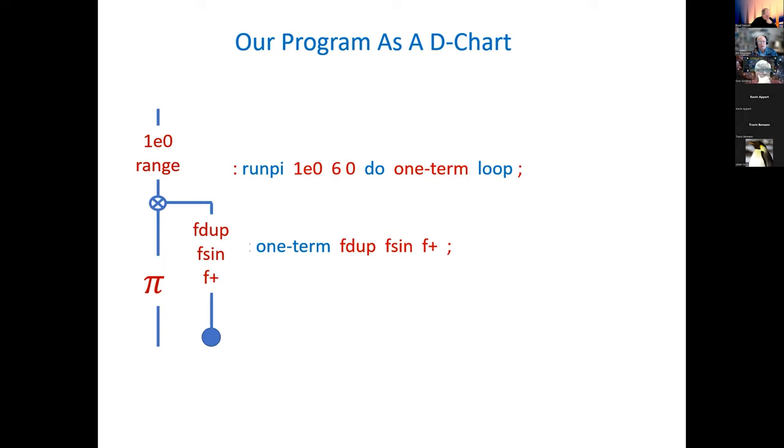So now we'll put it into Forth code. Our computed number is going to be our guess number n zero plus the error function, the sine of n zero. In Forth, a single term calculation would be using floating point. We have an input value, we duplicate that number, we take the sine of it, and we add the two together.